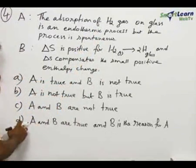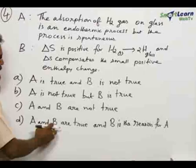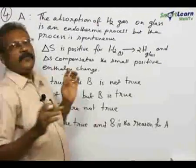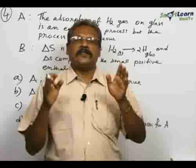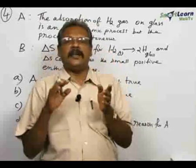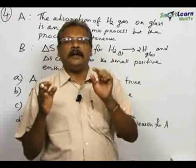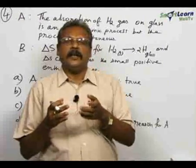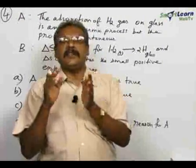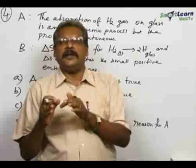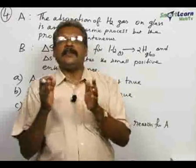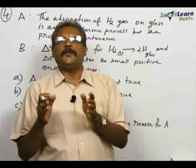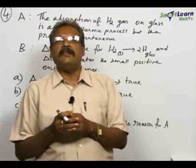Therefore, the correct option is D. A and B are true and B is the reason for A. Go for option D because delta S and delta H together decide the delta G value, that is the Gibbs energy change. Overall, if the Gibbs energy change is negative, the process is spontaneous. Here delta S compensates the positive enthalpy change and the process is spontaneous. So, go for option D.